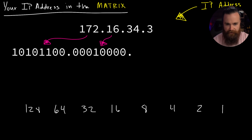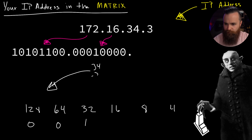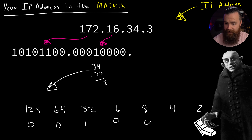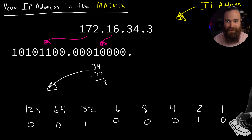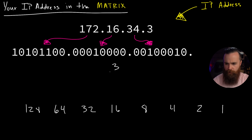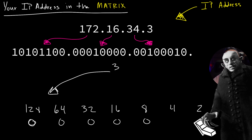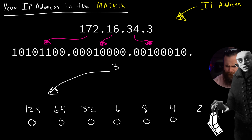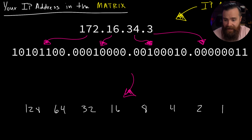Now pause the video and try the last two octets: 34 and 3. Third octet, 34: can we take 128? No. 64? No. 32? Yes - 34 minus 32 is 2, so 32 is on. 16? Zero. 8? Zero. 4? Zero. But 2 can be taken from 2 - that's a one. Then we have zero left, so the last bit is off. For the last octet, 3: 128, 64, 32, 16, 8, 4 - all off. 2? Yes - 3 minus 2 is 1, so 2 is on. And 1? 100% - that's on. That is 3 in binary. We've converted the full decimal IP address back into binary.